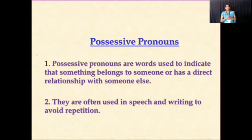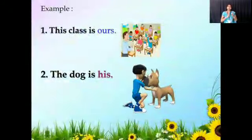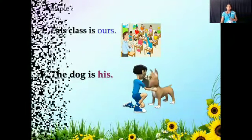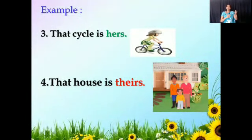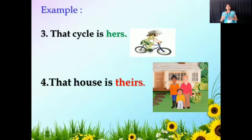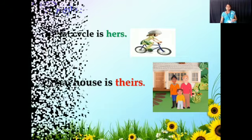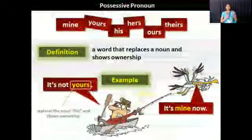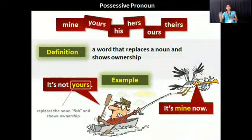It means that possessive pronouns show the belongings, and they are often used when we are speaking or writing to avoid repetition. Now let us see some examples. Example number one: This class is ours. The dog is his. That cycle is hers. That house is theirs. In all these examples, if you have observed, they are all showing belongings, using possessive pronouns like hers, theirs, his, ours. So in short, a word that replaces a noun and shows ownership is called a possessive pronoun.